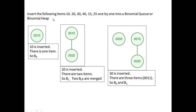Let us see an example of how to insert 6 items — 10, 20, 30, 40, 15 and 25 — one by one into a binomial queue. When 10 gets inserted, there is one element, so we require 1 b0 binomial tree. When 20 gets added, it is formed as a b0 tree and then merges with the existing b0 binomial tree, and it becomes a b1 binomial tree.